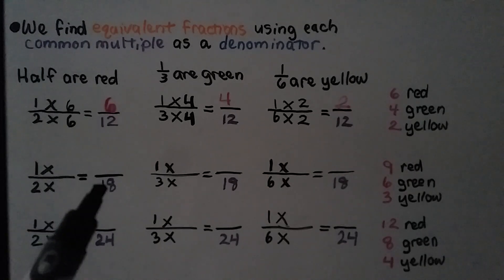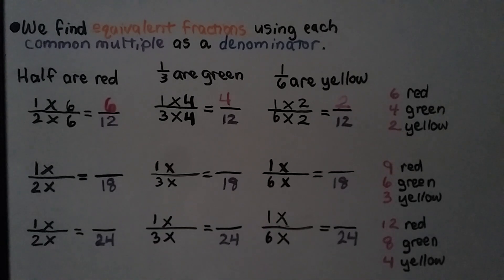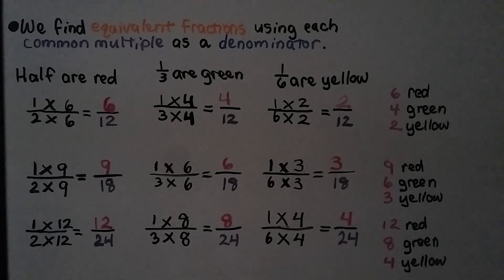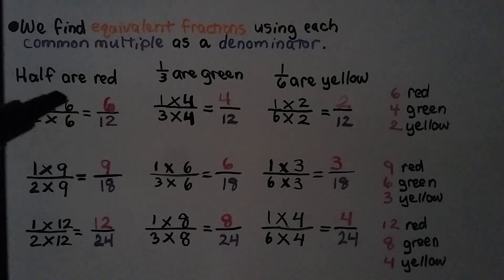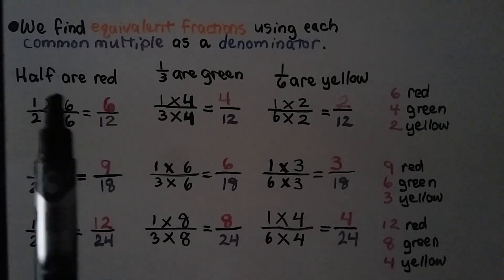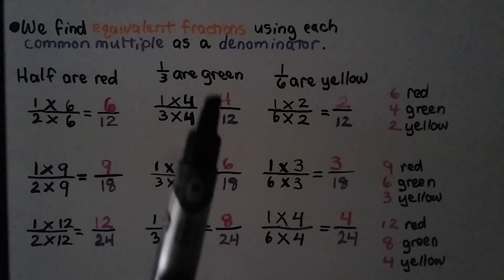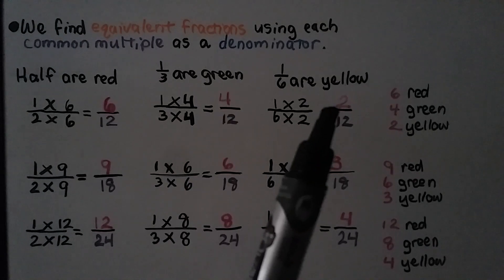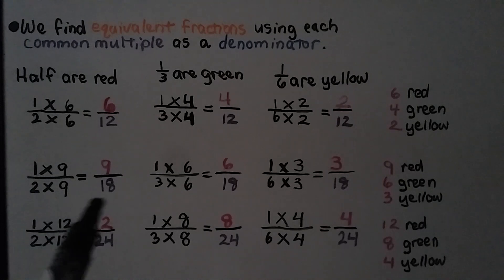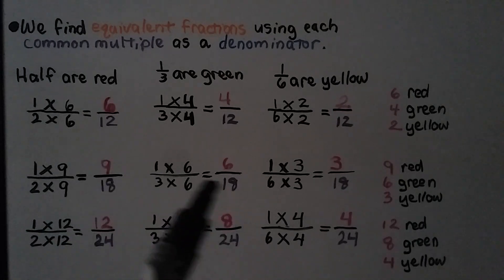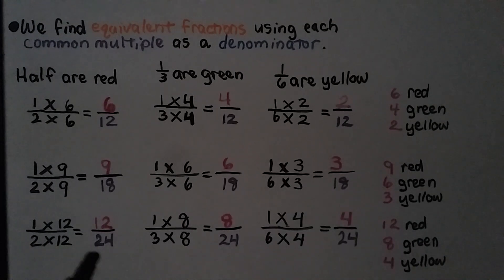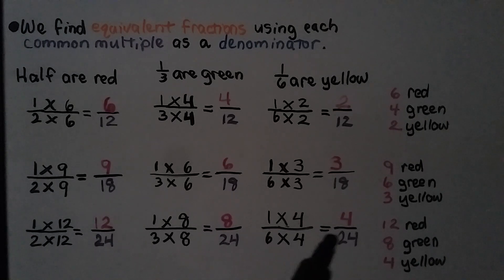We do the same for the denominator eighteen and twenty-four, finding equivalent fractions for one-half, one-third, and one-sixth in each case. If there are twelve beads, six will be red, four will be green, and two will be yellow. If there are eighteen beads, nine will be red, six will be green, and three will be yellow. If there are twenty-four beads, twelve will be red, eight will be green, and four will be yellow.